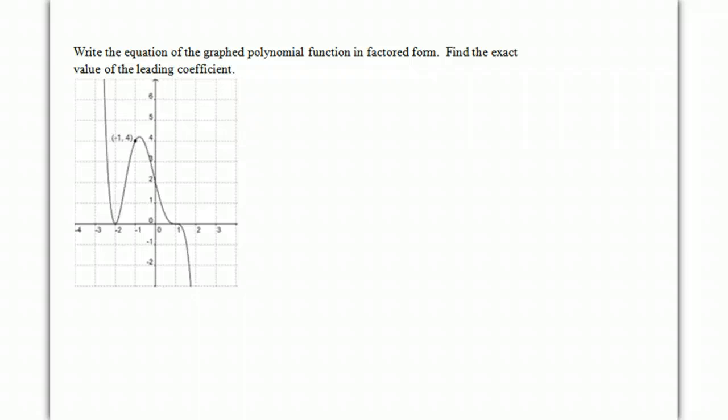So the first thing we should do is examine the zeros. We should notice that there's a zero at negative 2, and since it is tangent to the x-axis, that tells us there's a double zero, a double root, or it's called a multiplicity of 2.